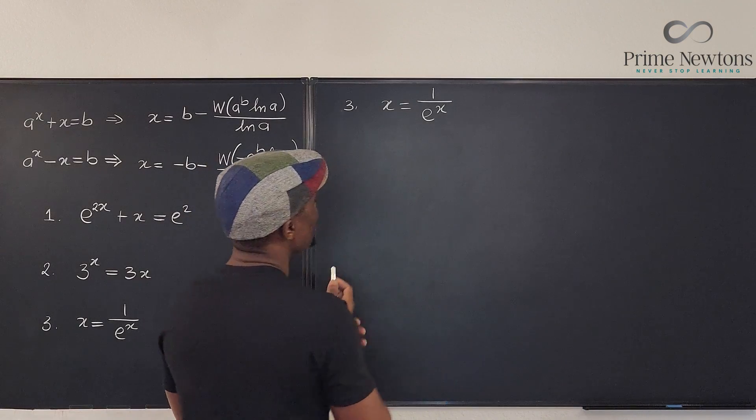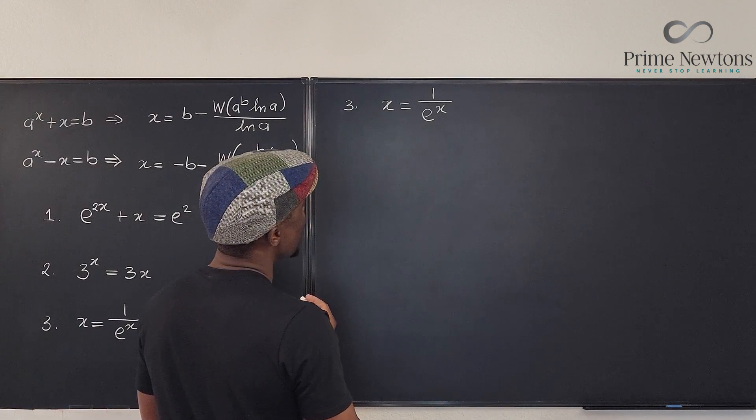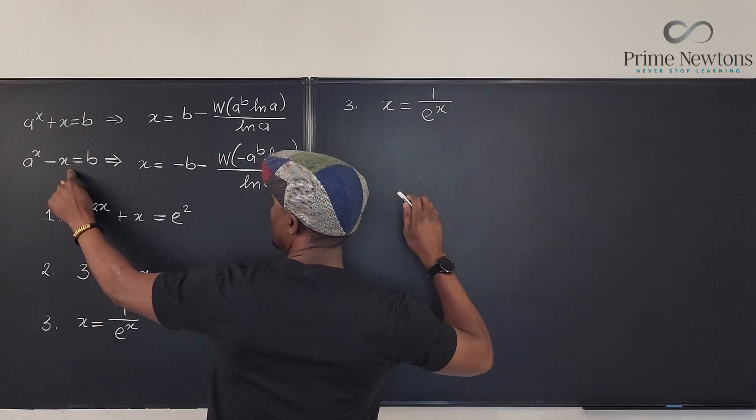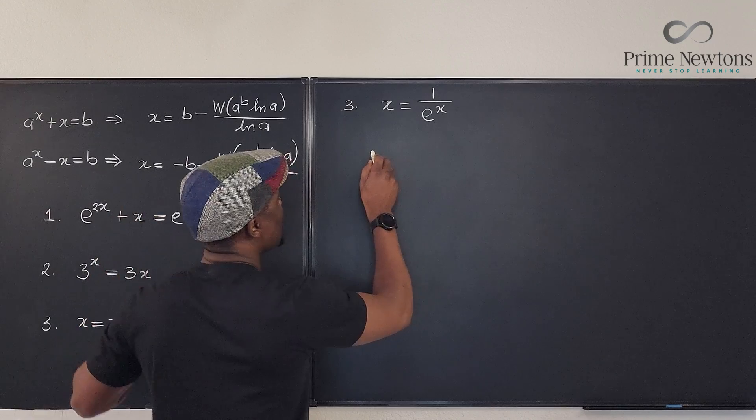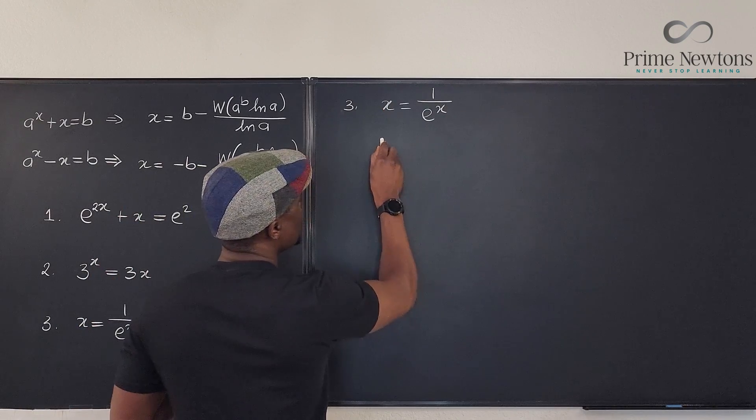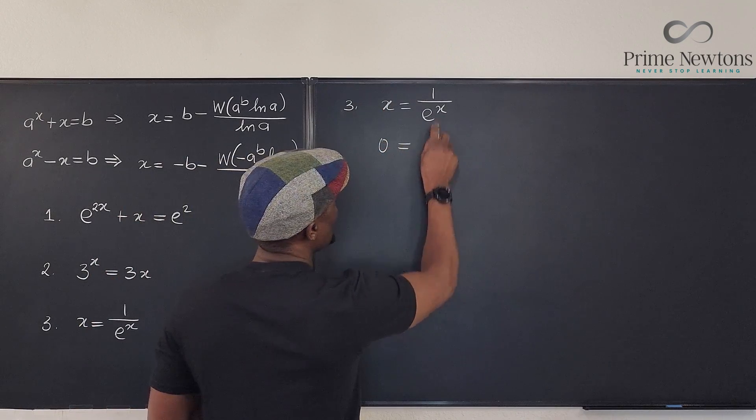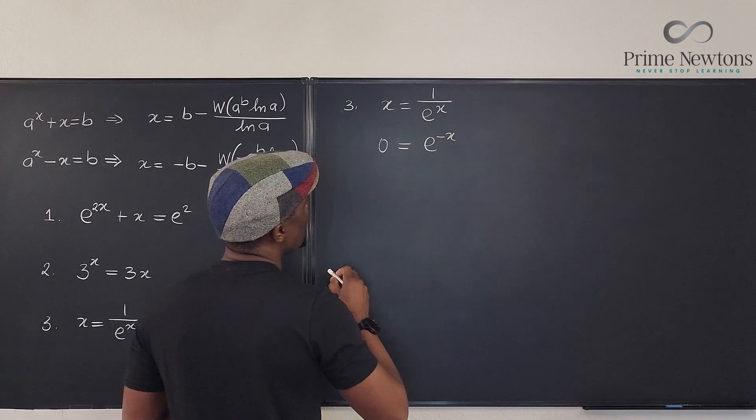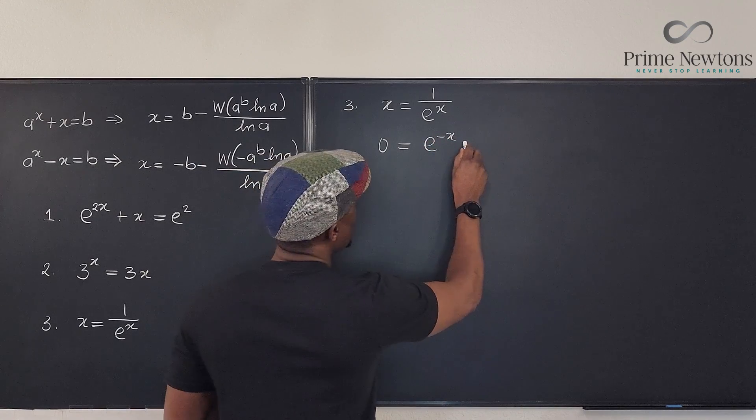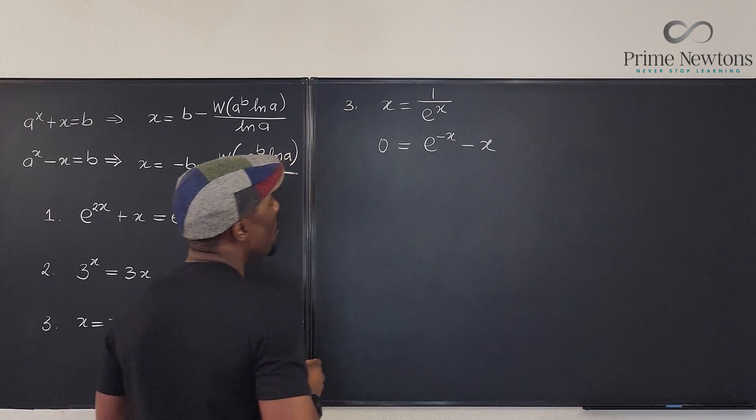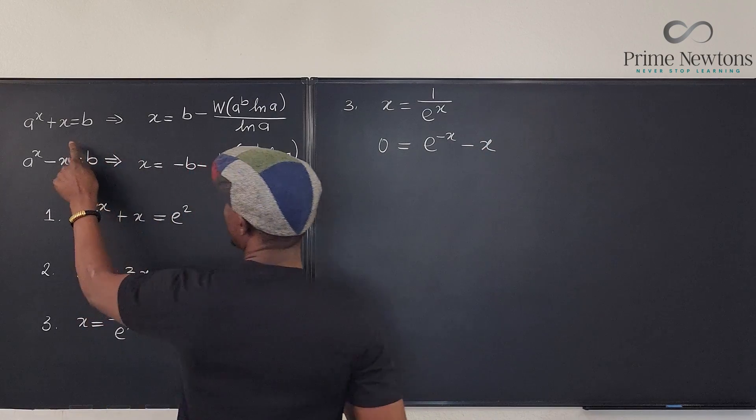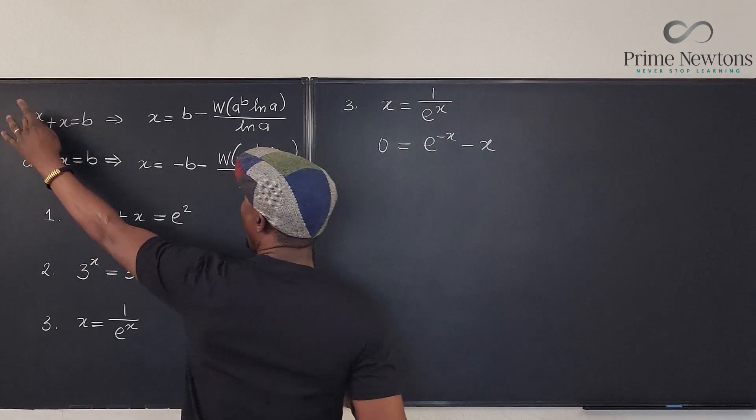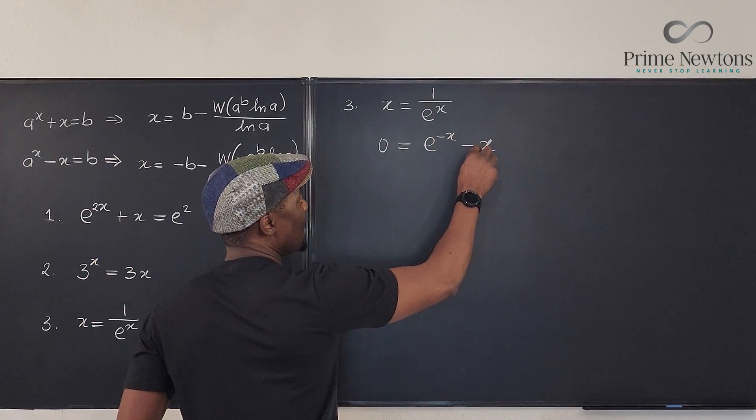So, for number three, we have to rewrite this in a very nice way. So, what I'm going to do is, let's write it so that it looks like this or this. And we're going to say that... Let's move this over. Let's leave zero here. And then we have zero equals... We can write this actually as e to the negative x, right? And we say minus x. Oh, that's this. This one, right? Or maybe not.